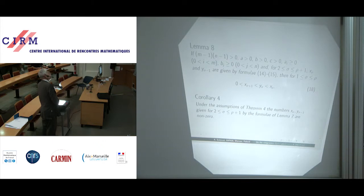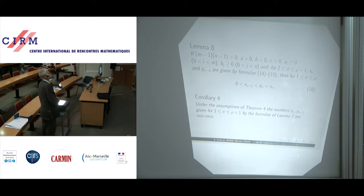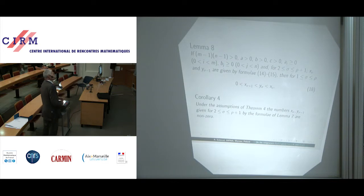Lemma 8: if (m−1)(n−1) is positive — perhaps it should be greater than 1 — and A, B, C are positive and the remaining coefficients are non-negative, then for sigma between 2 and rho plus 1, with x_sigma and y_{sigma−1} given by formulae 14 and 15 (this formula disappeared, but...) the important thing is that x_{rho+1} equals 1, y_rho equals f_{rho+1}(1), x_sigma equals g_sigma(y_sigma) divided by x_{sigma+1}, and y_{sigma−1} equals f_sigma(x_sigma) divided by y_sigma.